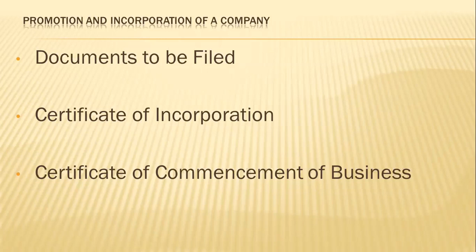The application for registration of a company should be presented to the registrar of companies of the state in which the registered office of the company is to be situated. The application shall be accompanied with the following documents: first, the memorandum of association; second, the articles of association, if any, duly signed by the subscribers of the memorandum; third, a statement of the nominal or authorized capital; fourth, a notice of the address of the registered office of the company. This may be done within 30 days of registration if it cannot be filed at the time of registration.